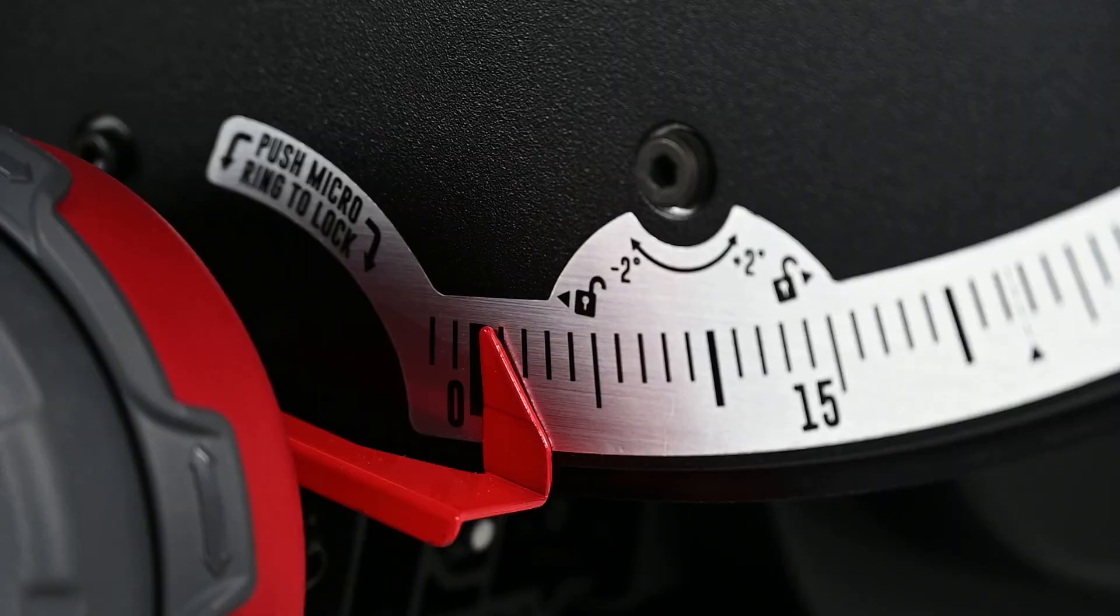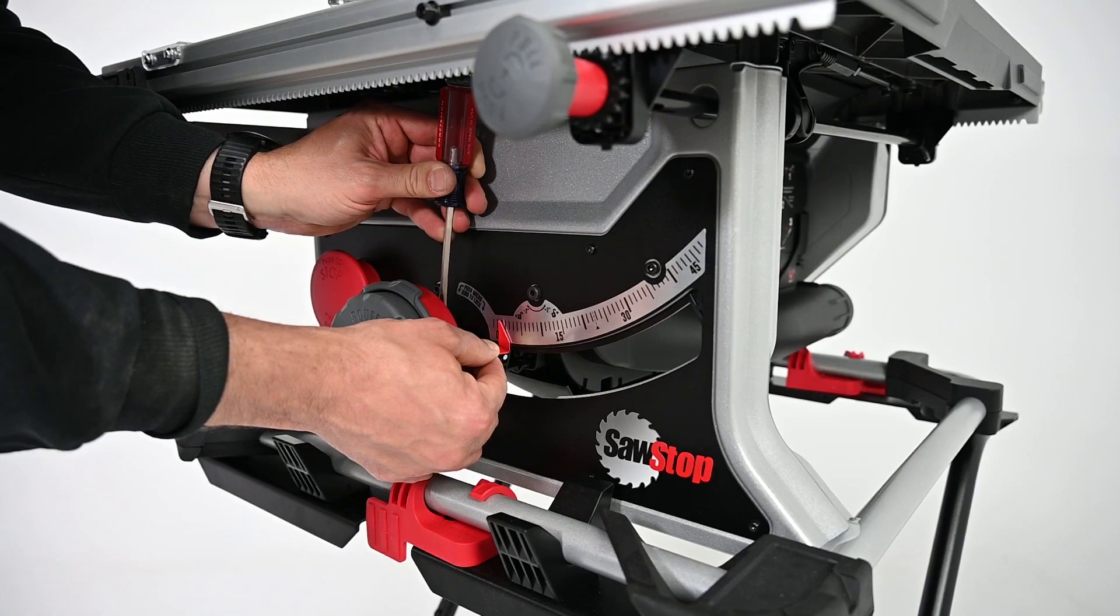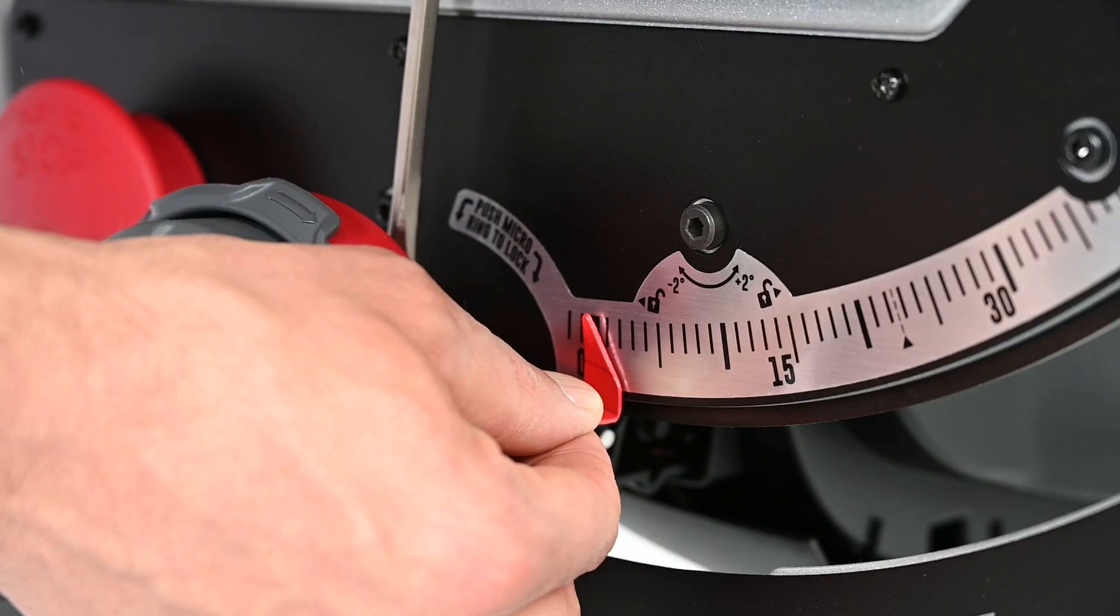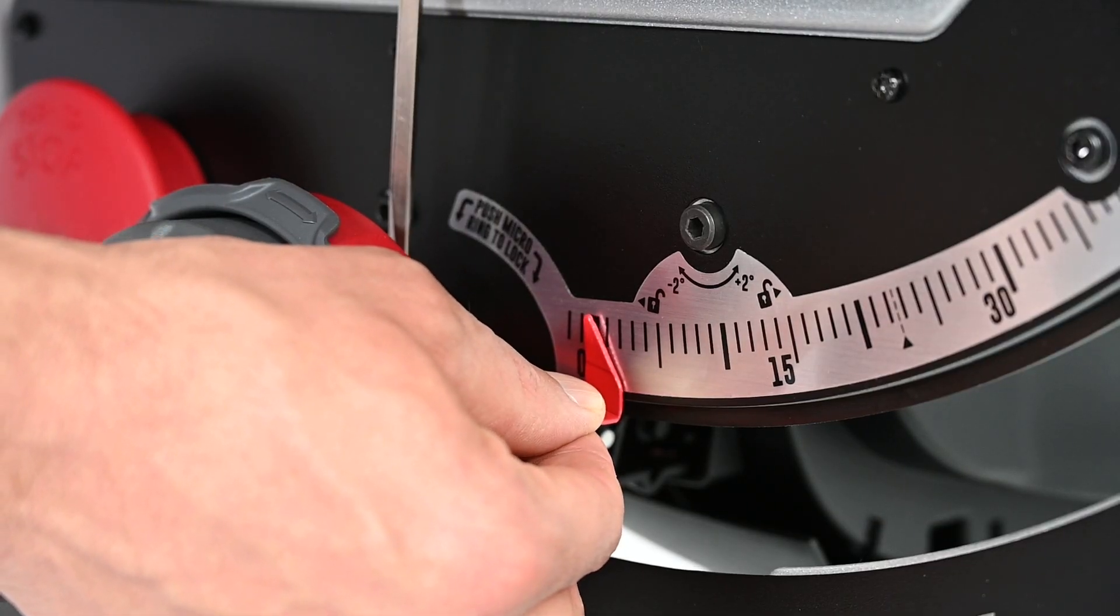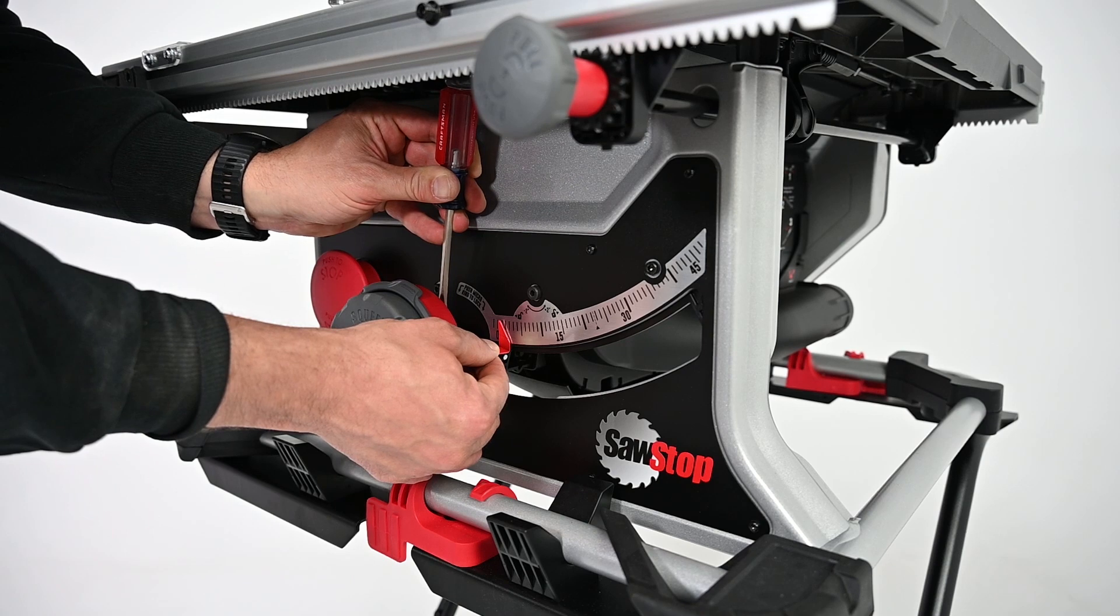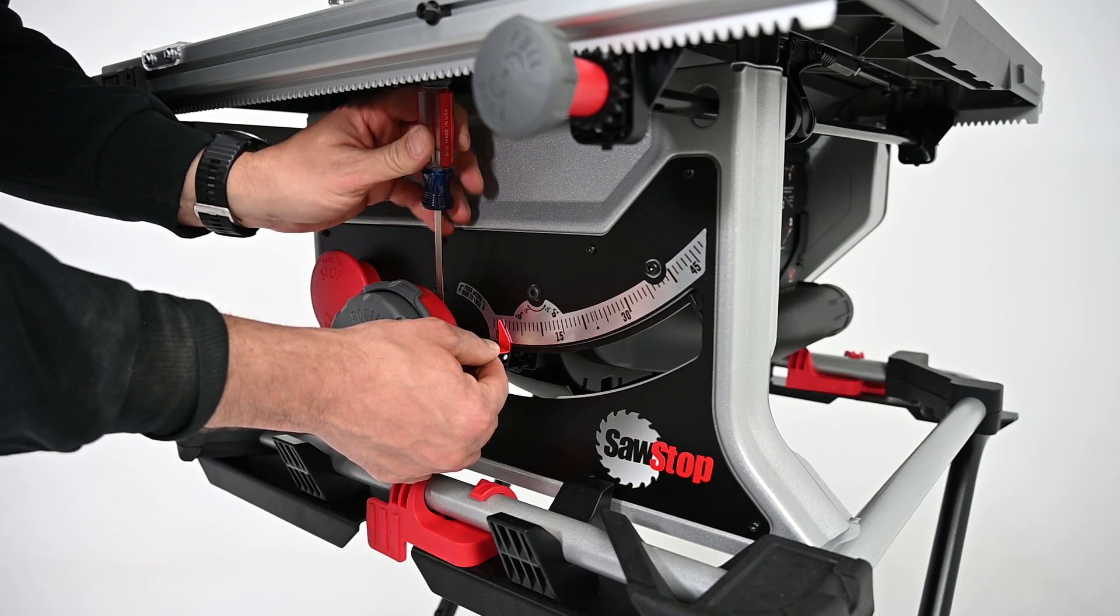Confirm the bevel indicator is pointing to zero. If it is not at zero, loosen the screw for the indicator. Shift the indicator to align with zero degrees on the bevel scale. Tighten the screw for the indicator.